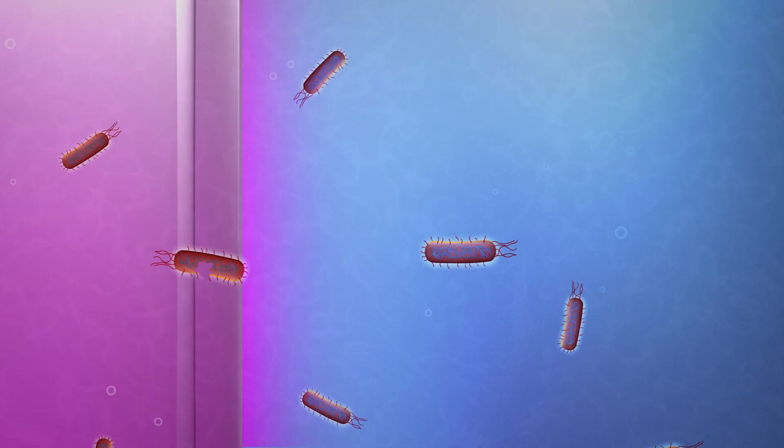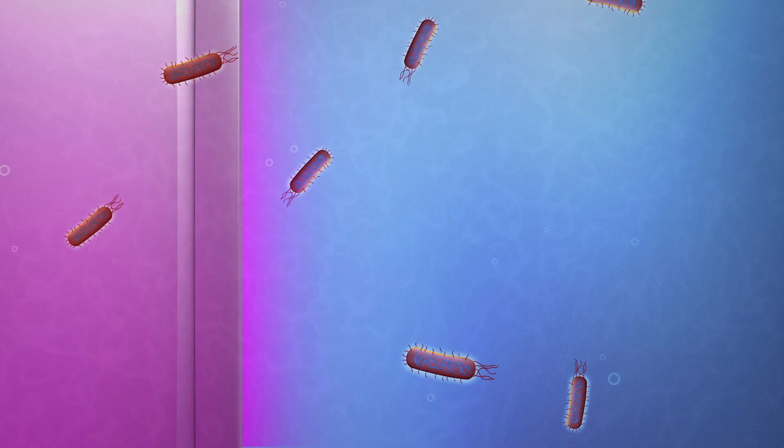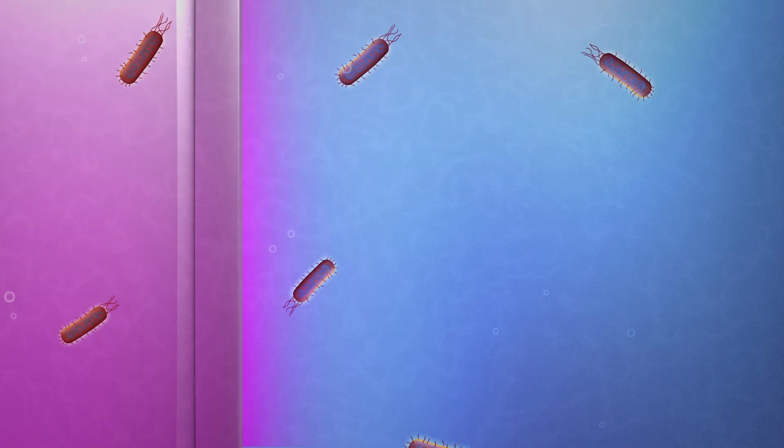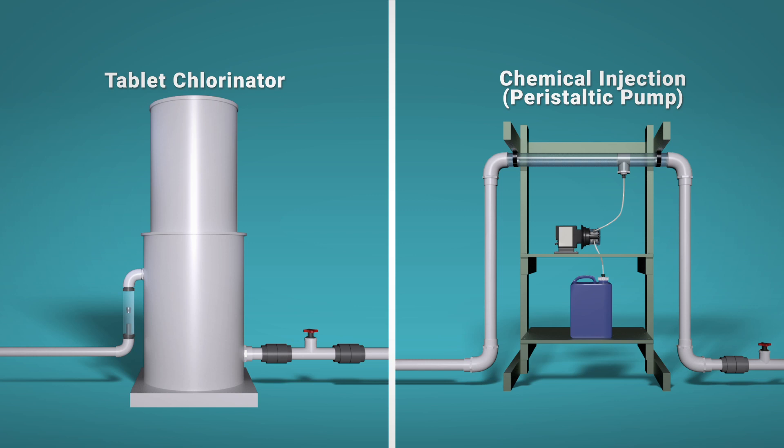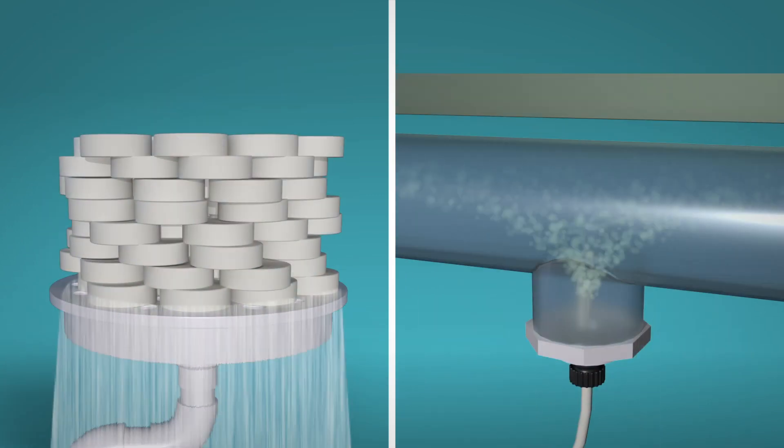UV light kills pathogens and other organisms like E. coli by exposing pathogens to radiation in a UV disinfection system. Tablet chlorinator and chemical injector systems use chemicals to sanitize water.